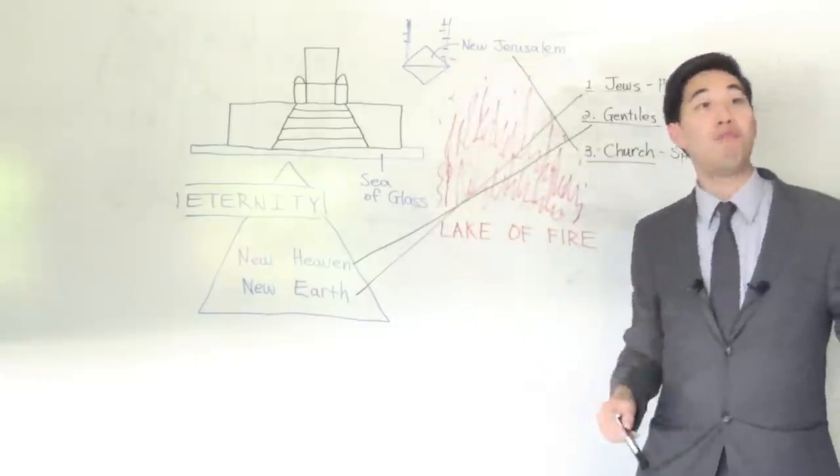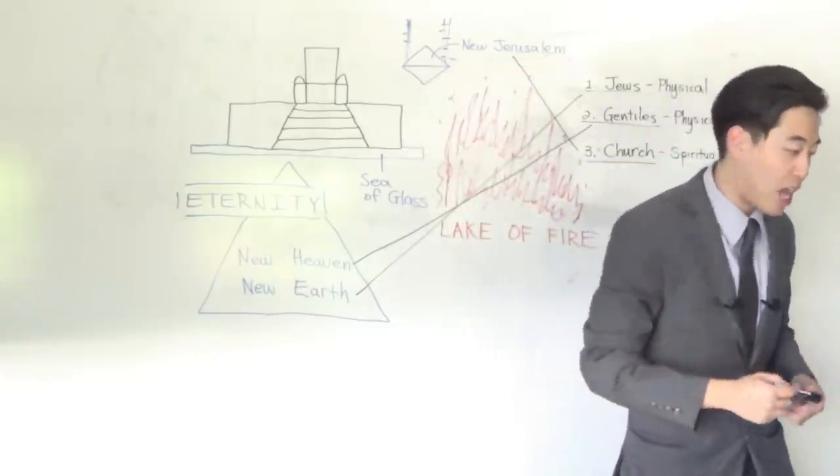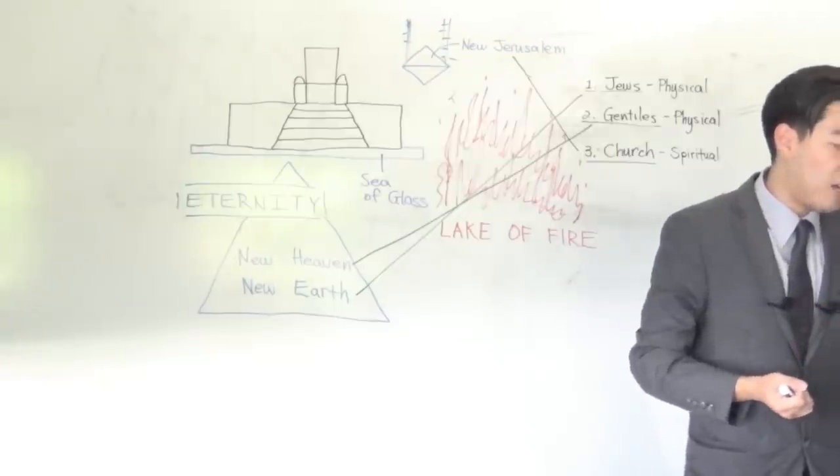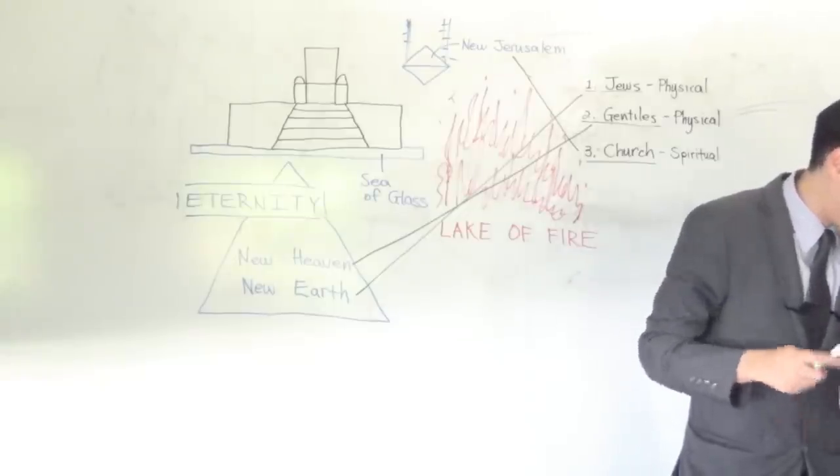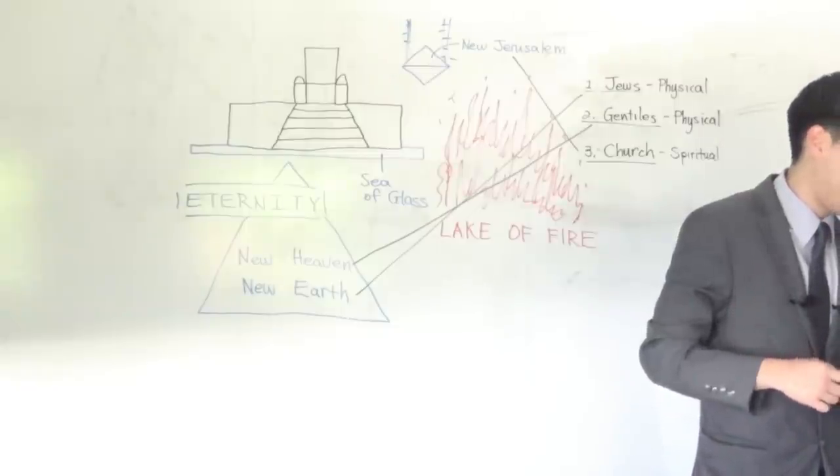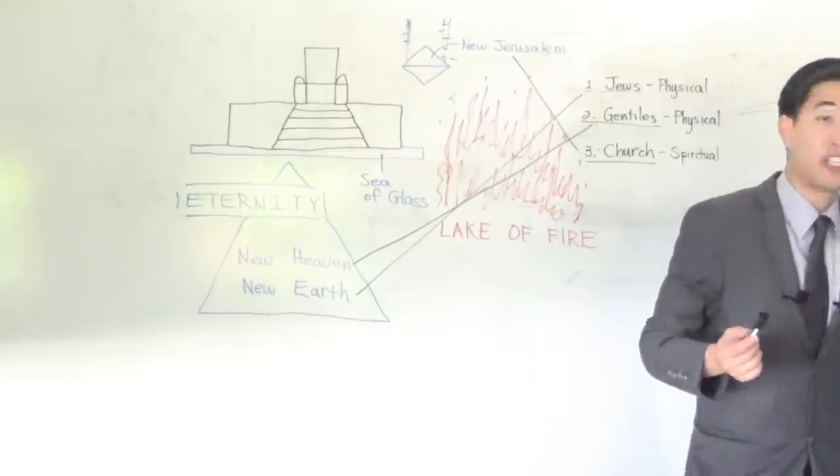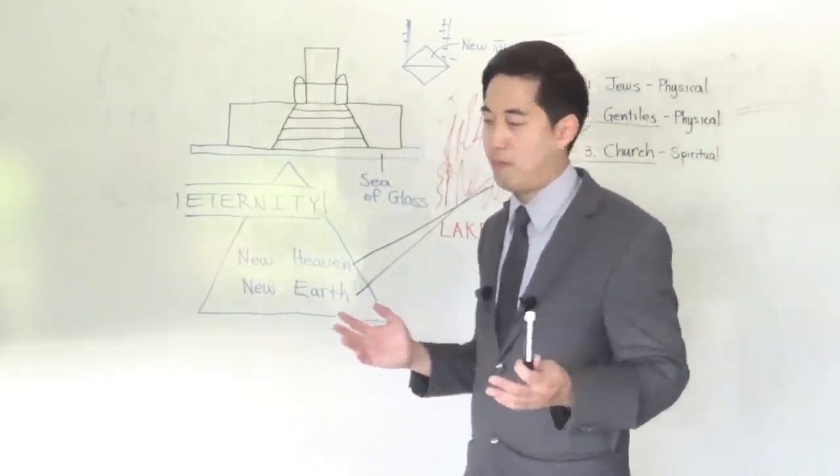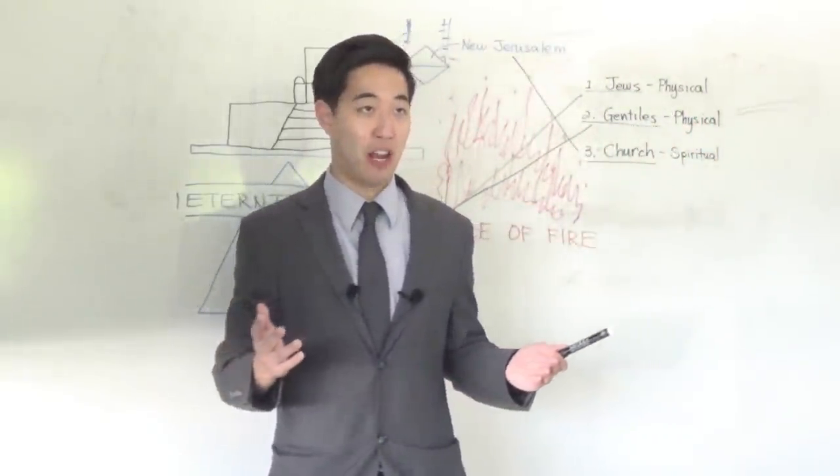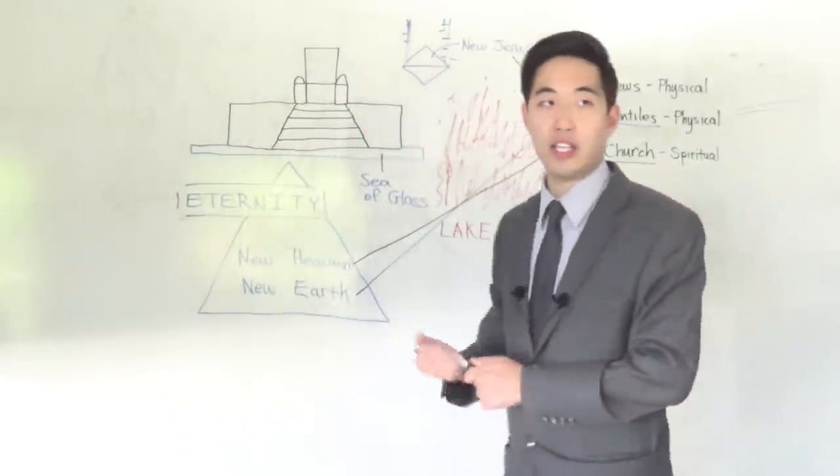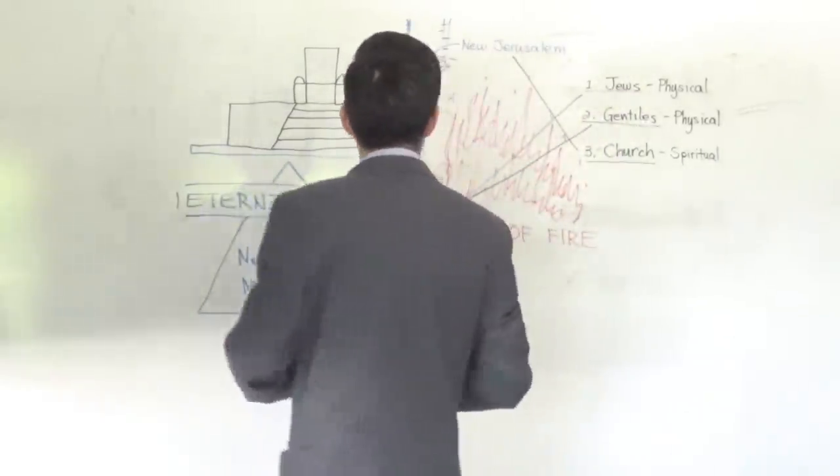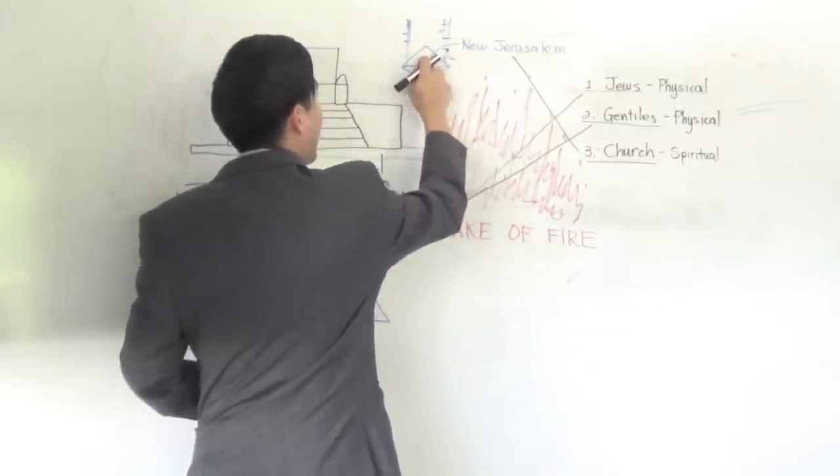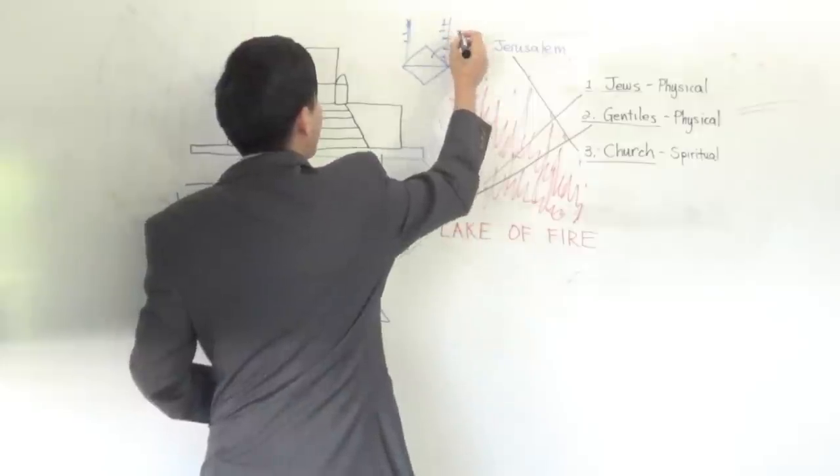So now mankind is with God. Now notice, this is the tabernacle of God is with men, but if you keep reading down at verse 22, there's no temple. Verse 22 says there's no temple, but the Bible says the tabernacle is with men. The idea is it's within it—there's no temple in here. God considers this whole thing His tabernacle.